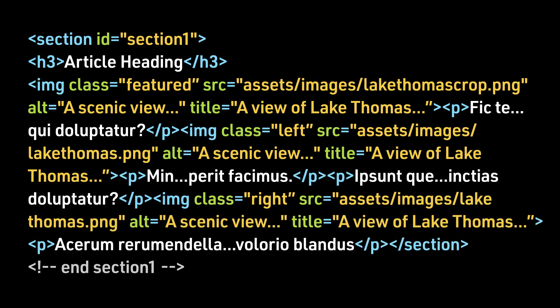Here is our HTML. We see that we have a section. That section has an H3 article heading. There are several instances of paragraph text with placeholder text, and we have our three image elements. Note, for the purpose of our video, we are truncating some of the placeholder text in Alt and Title descriptions. This way, we can focus your attention to the key HTML code. Because we have three images and we will be styling them differently, we added class attributes so that they can be targeted individually.